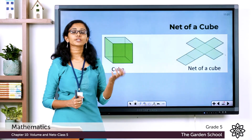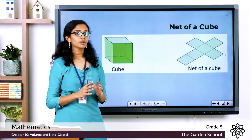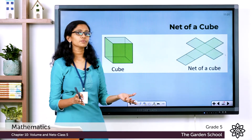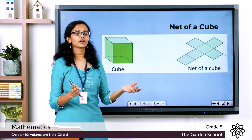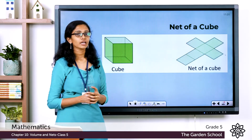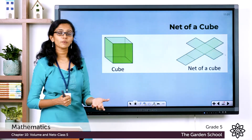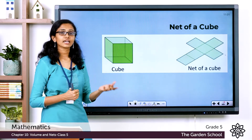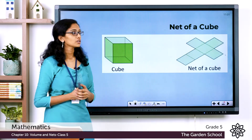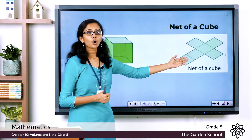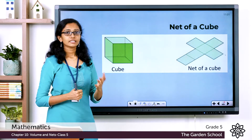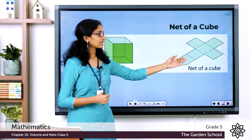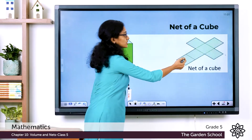First, the net of a cube. So what is a cube? A cube is also a type of cuboid in which the length, the breadth, and the height are all the same. A cube has got six faces, like in the case of a cuboid. Here you can see the net of a cube. There are six faces on this solid cube and in the net there are also six faces.